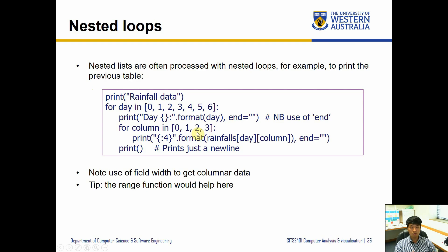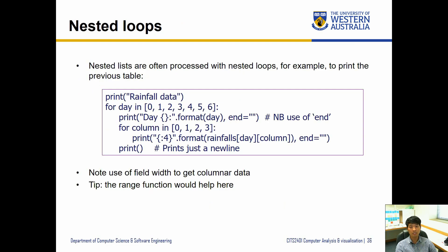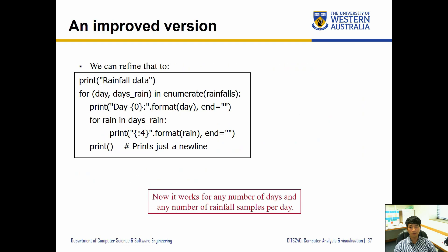We can specify the day and days_rain, whereas our previous one we have the day in column which may not really make sense if some other person is reading it. So now it works for any number of days and any number of rainfall samples per day, whereas the previous one is stuck with only seven days and each reading requires four readings per day.